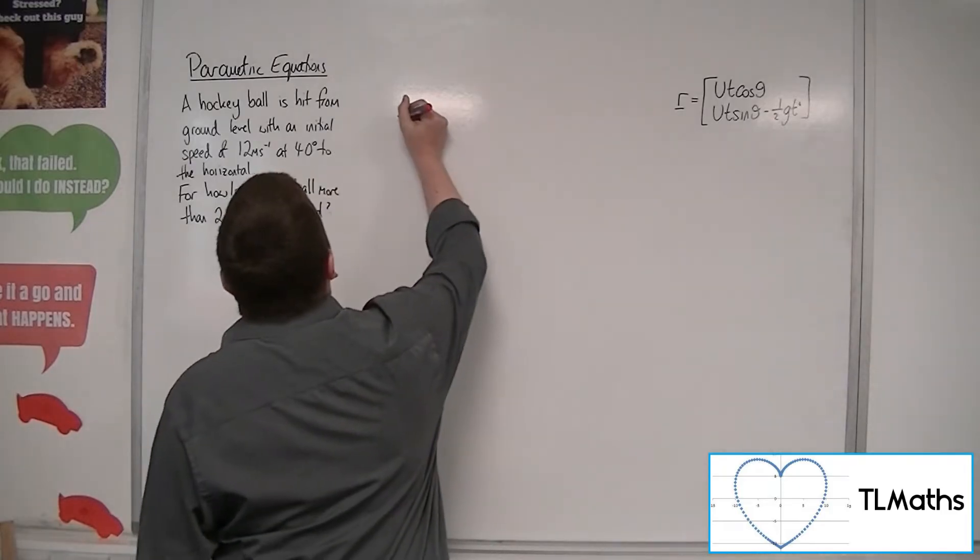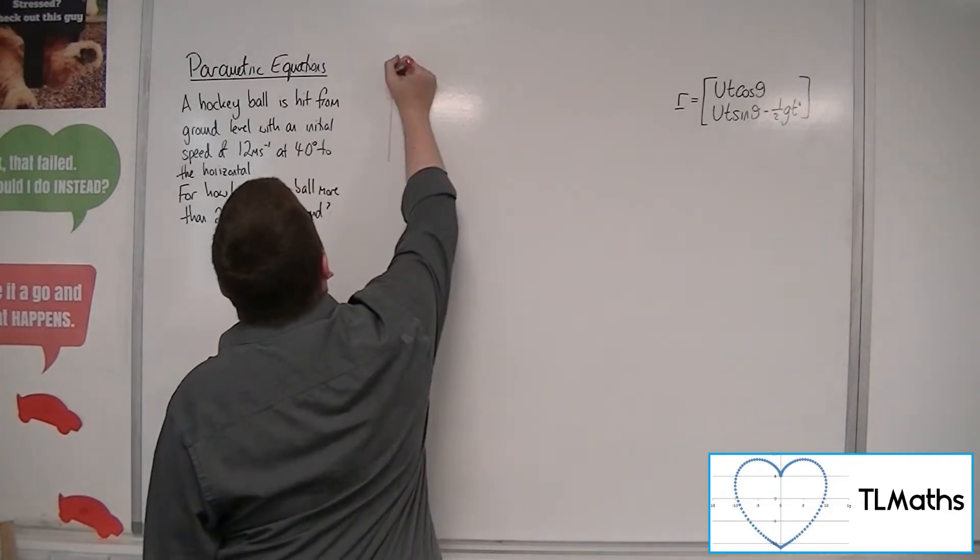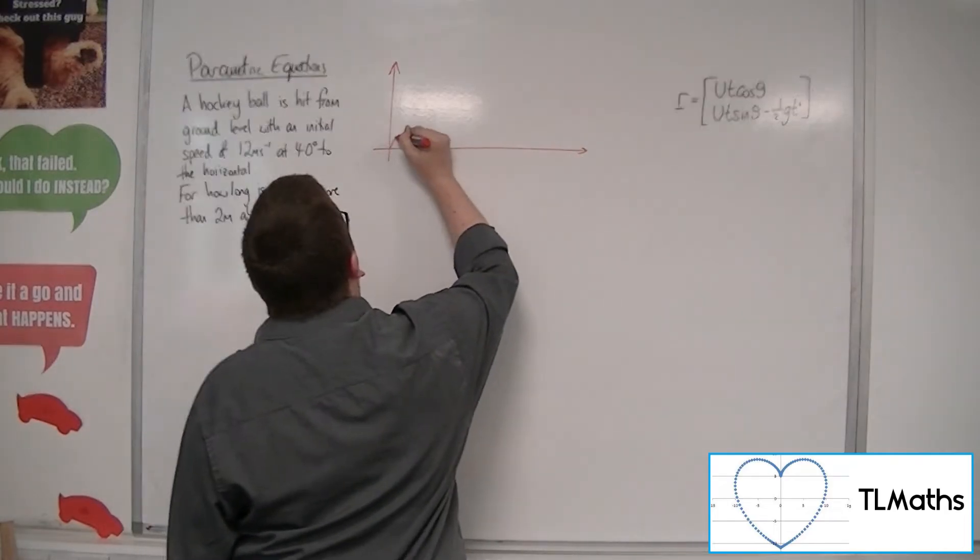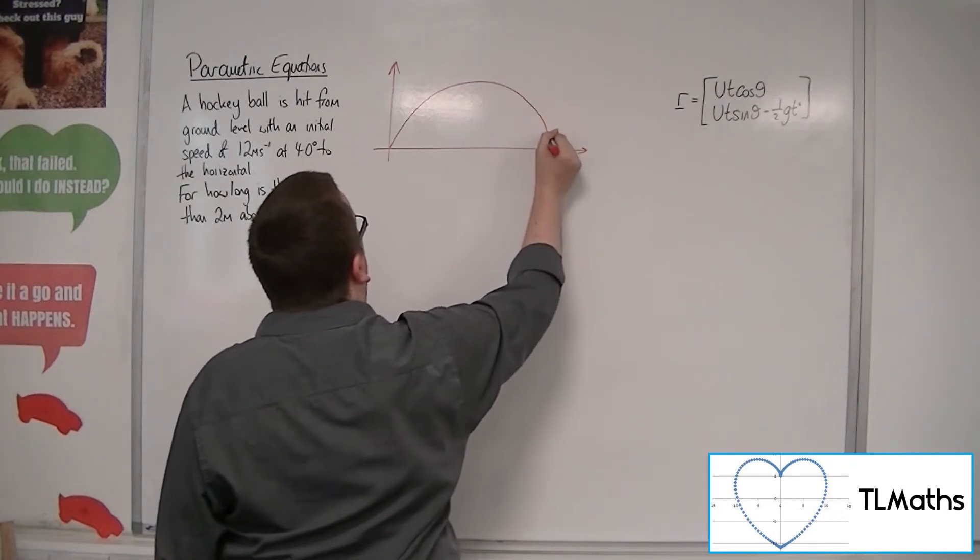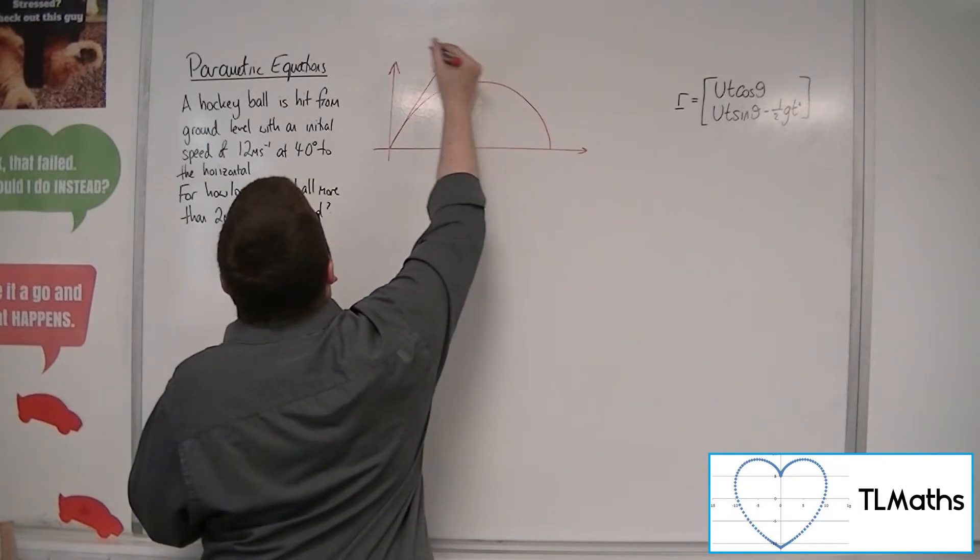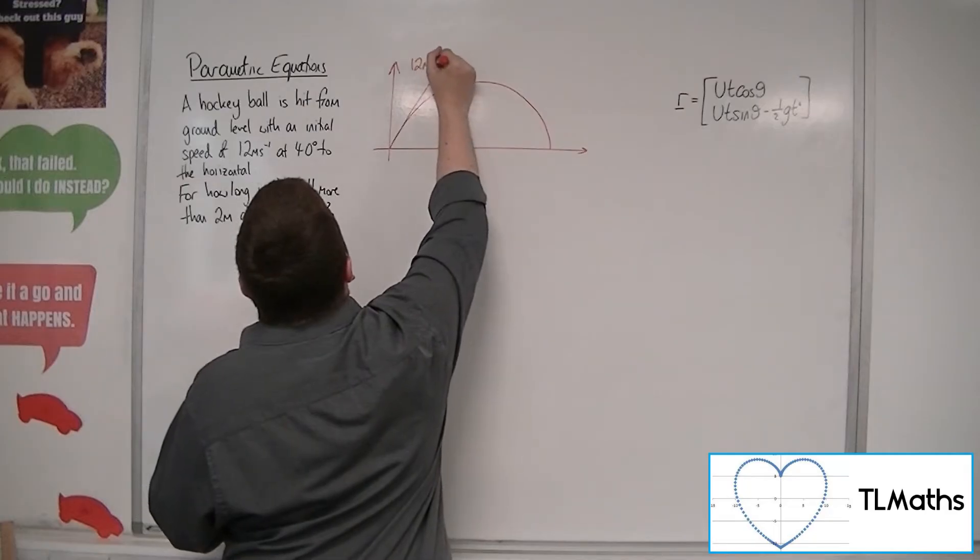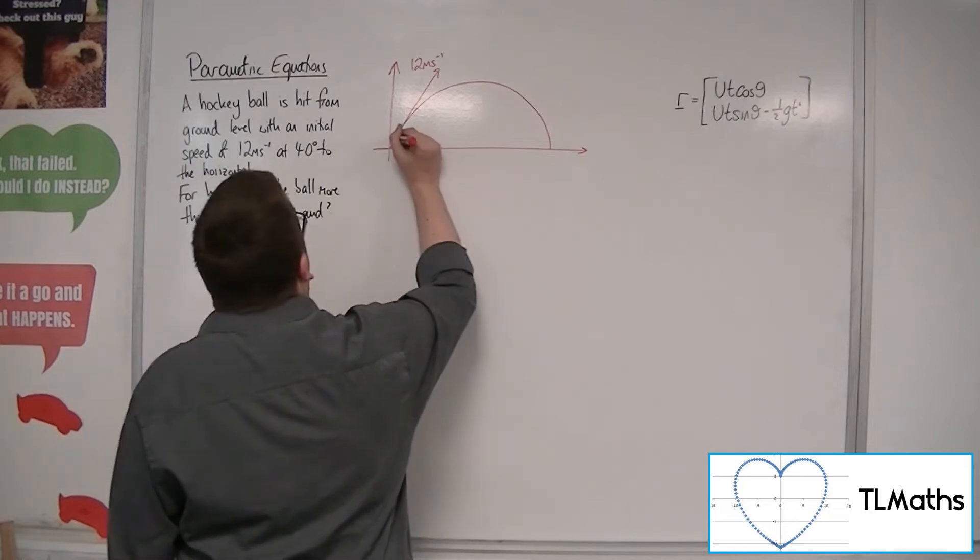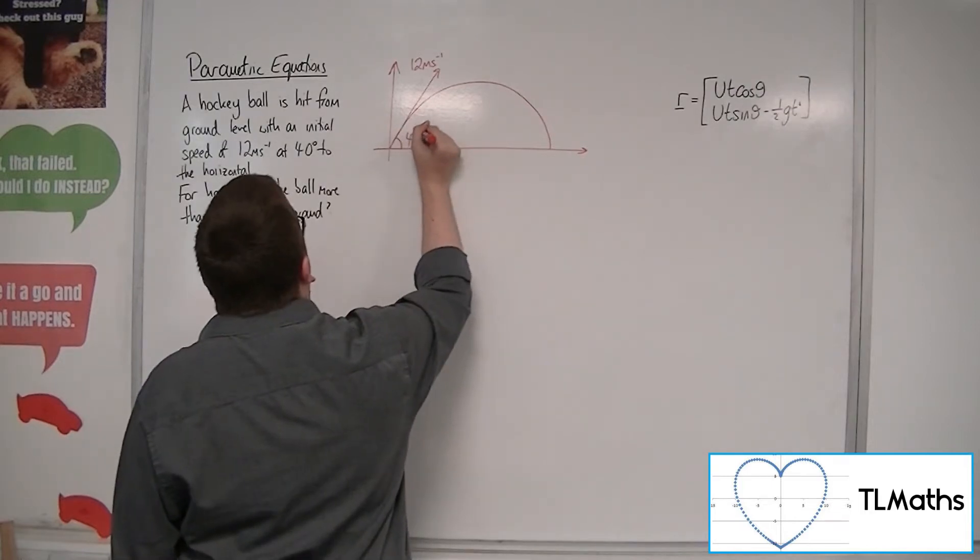So what we want to do first is to draw ourselves the situation, a little diagram to represent it. So there is the path of the ball, and we have this initial speed of 12 metres per second, so it's initial velocity. And we are at 40 degrees to the horizontal.